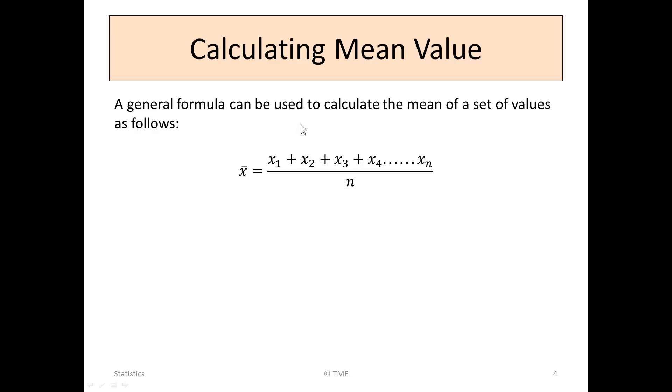A general formula can be used to calculate the mean of a set of values as follows. It is given as x bar is x₁ plus x₂ plus x₃ plus x₄ all the way down to the last number you have xₙ divided by n.